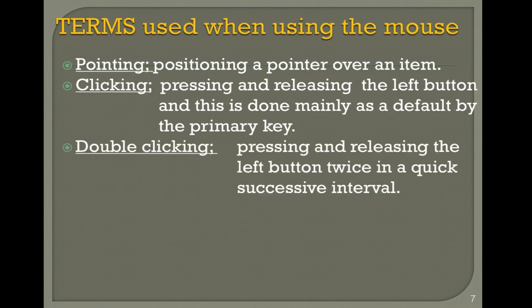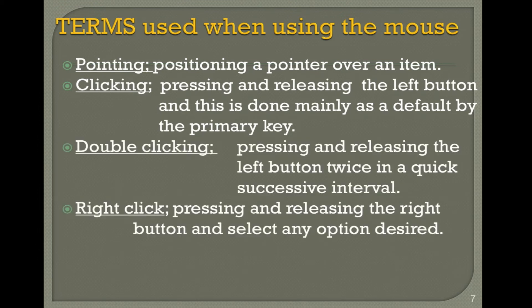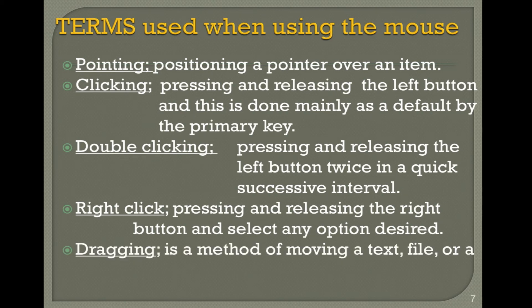You need to know: when you move the mouse and point over items, that is called pointing. Right-clicking means pressing and releasing the right button to select a desired option. Clicking means pressing and releasing the left button — this is done as a default by the primary key. Double-clicking is pressing and releasing the left button twice in quick succession, just in a blink of an eye.